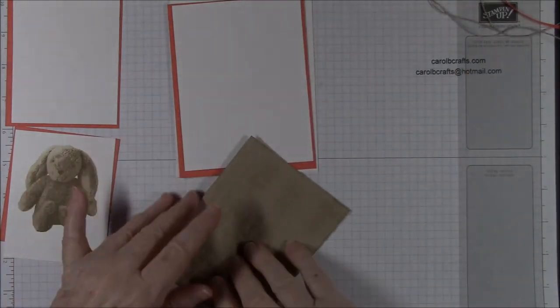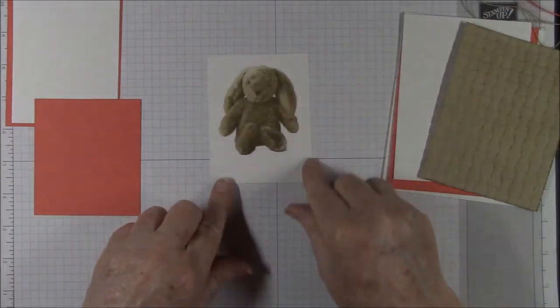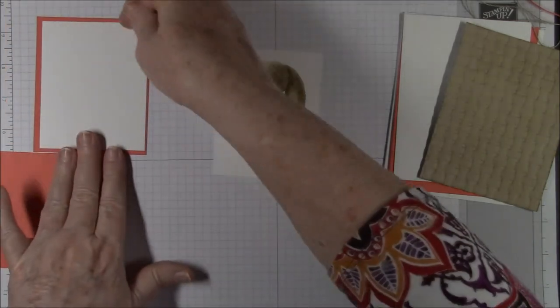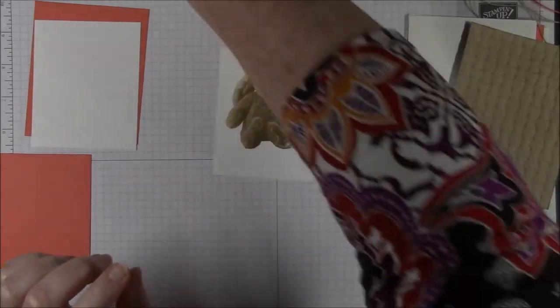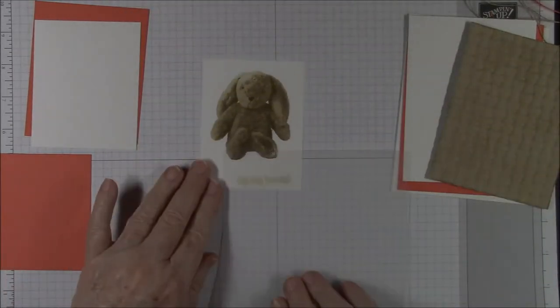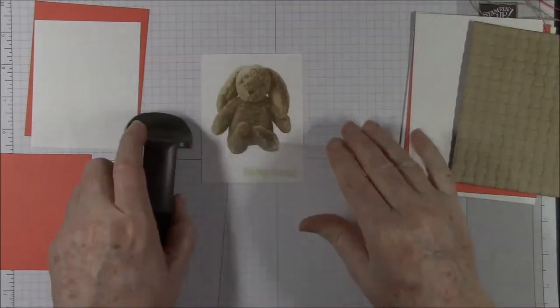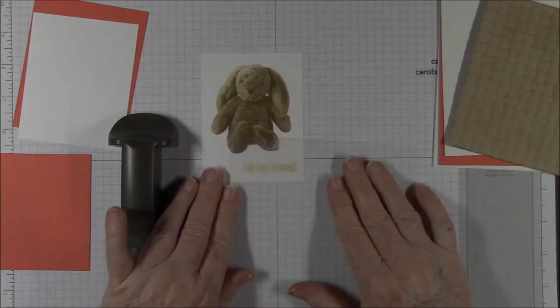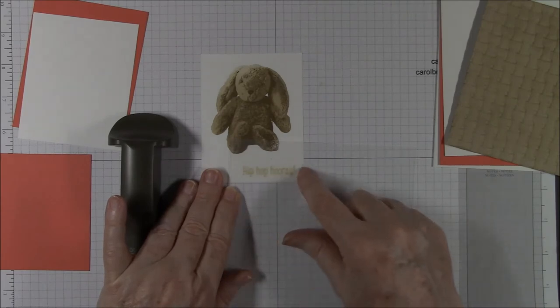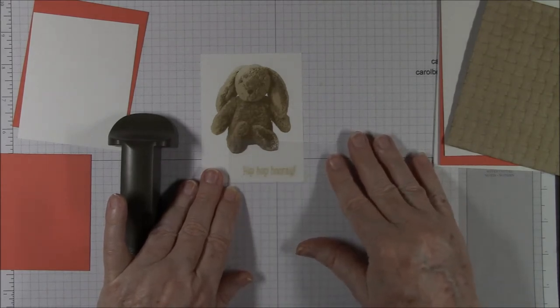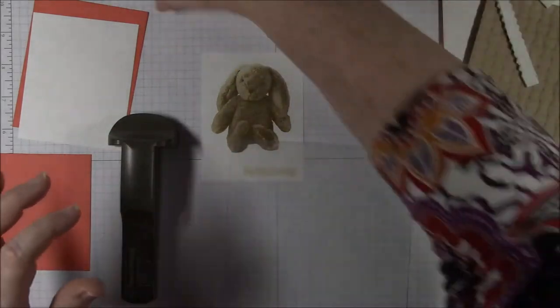So I do think that we need to stamp this image. We need to stamp the Hip Hop Hooray and we need to stamp our inside sentiment. And so I'm going to use the Stamp-O-Majig for this, only because for me to do sentiments, it's much easier to use the Stamp-O-Majig than to try to get it all straight on the Stamparatus. So I've got it about a quarter of an inch from the bottom and a quarter of an inch from the right. Make sure it's level.